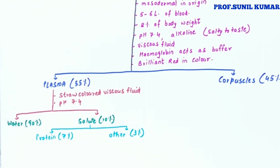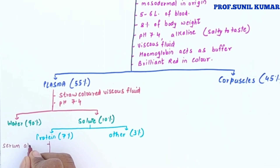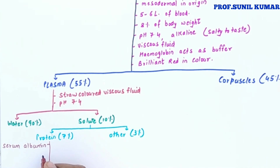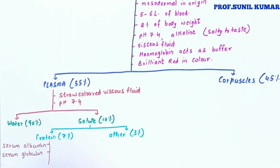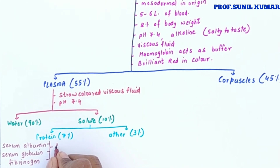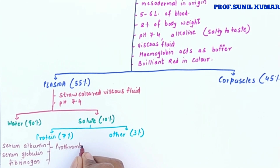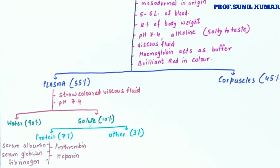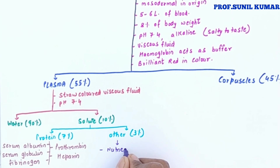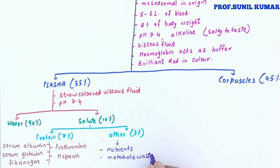The various types of plasma proteins found in the blood are important exam questions. The first is serum albumin, then serum globulin, prothrombin, and fibrinogen. We also have heparin, which is an anticoagulant that prevents the blood from clotting inside the body.